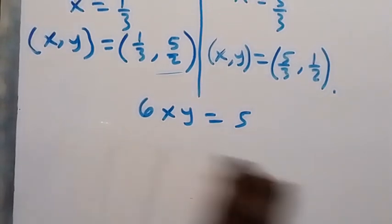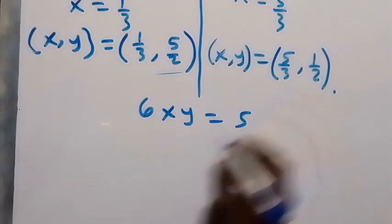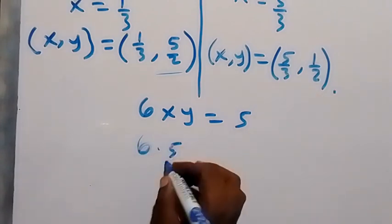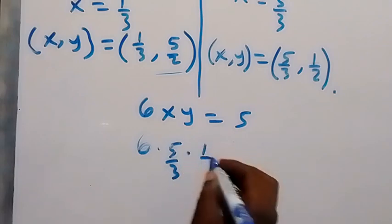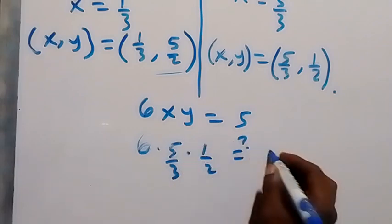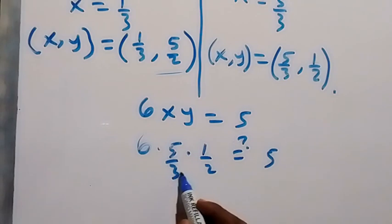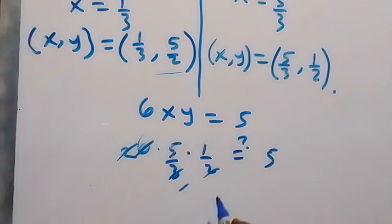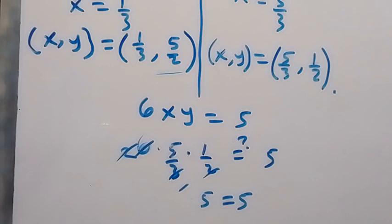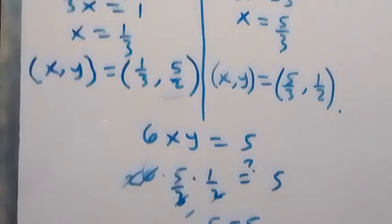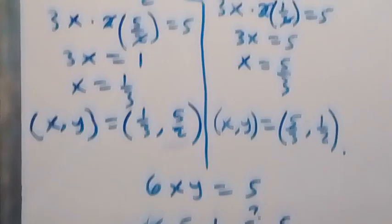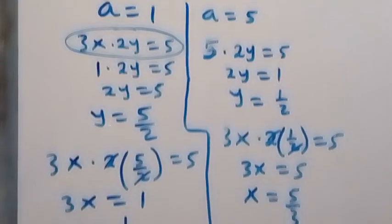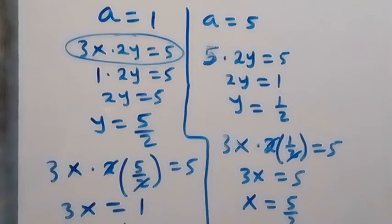Checking the second solution: 6 times (5/3) times (1/2) equals 5. The 3 cancels and the 2 cancels, leaving 5, which equals 5. This confirms the second solution satisfies the given problem. Thank you for watching — don't forget to subscribe for more videos and turn on the notification bell.